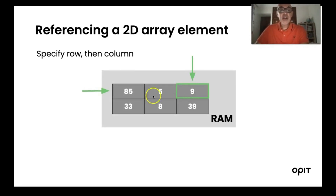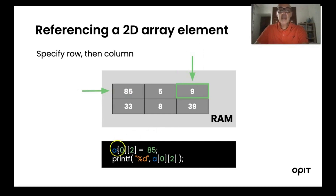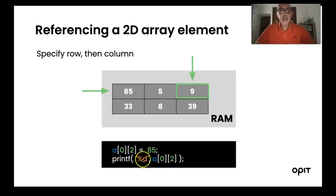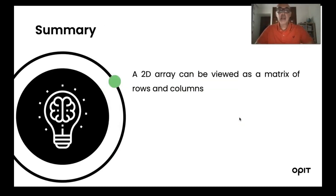To refer to an element, we specify first the row then the column. In this case, this cell is row number zero with column number two. I can treat it as a normal variable: a[0][2] = 85, or in this case it should be nine. I can print this cell as a normal variable using %d, so printf("%d", a[0][2]) will print nine in our case.